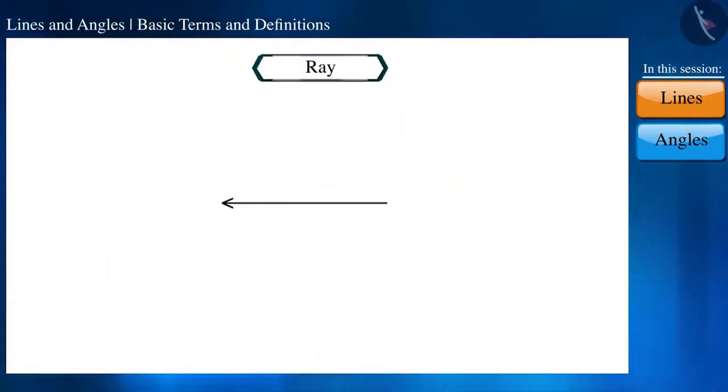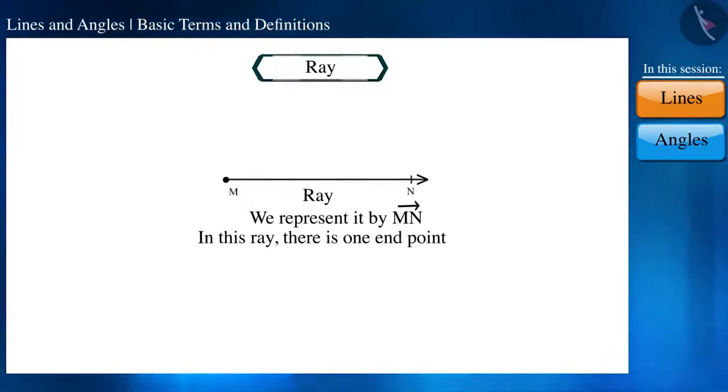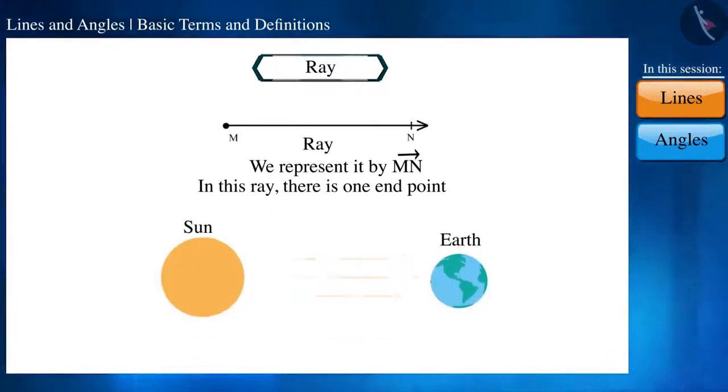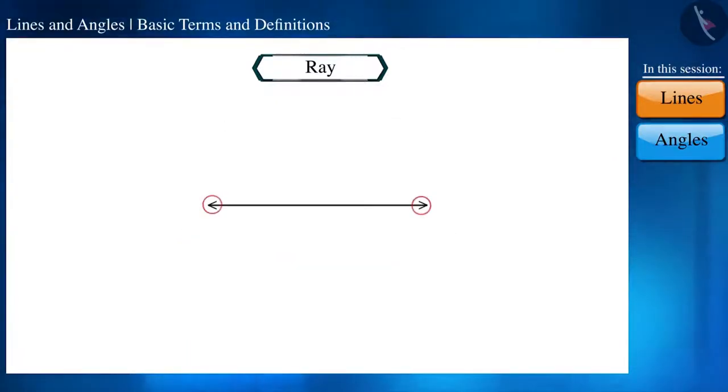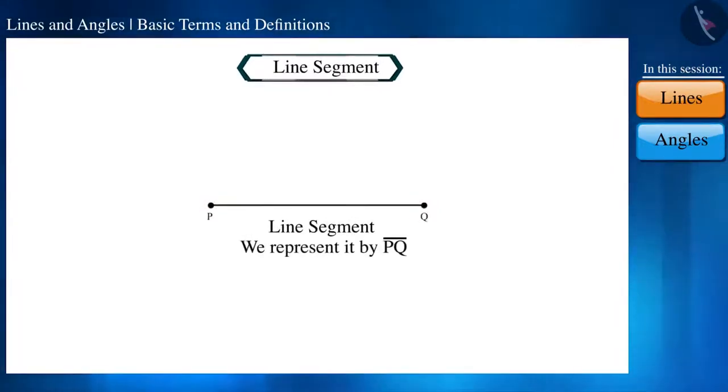Now friends, what will happen if we represent one end of a line by a point? Now, we will not call it a line, but a ray. We call the light coming from the sun a ray because the source of origin of light is fixed. If we represent both the ends by points, then it will look somewhat like this. And now, this is a line segment.